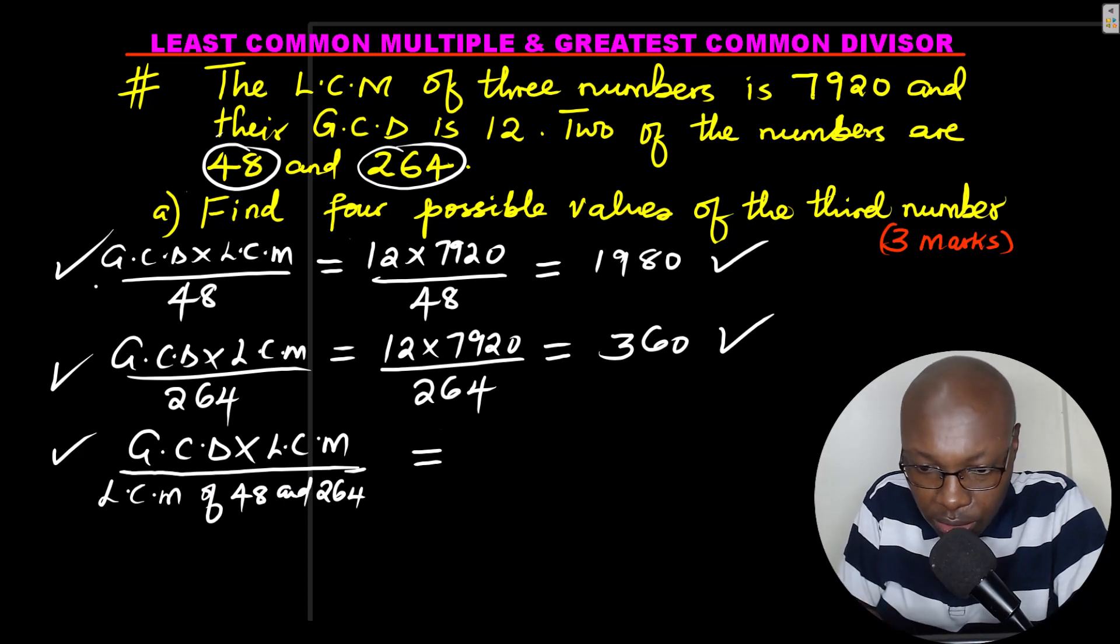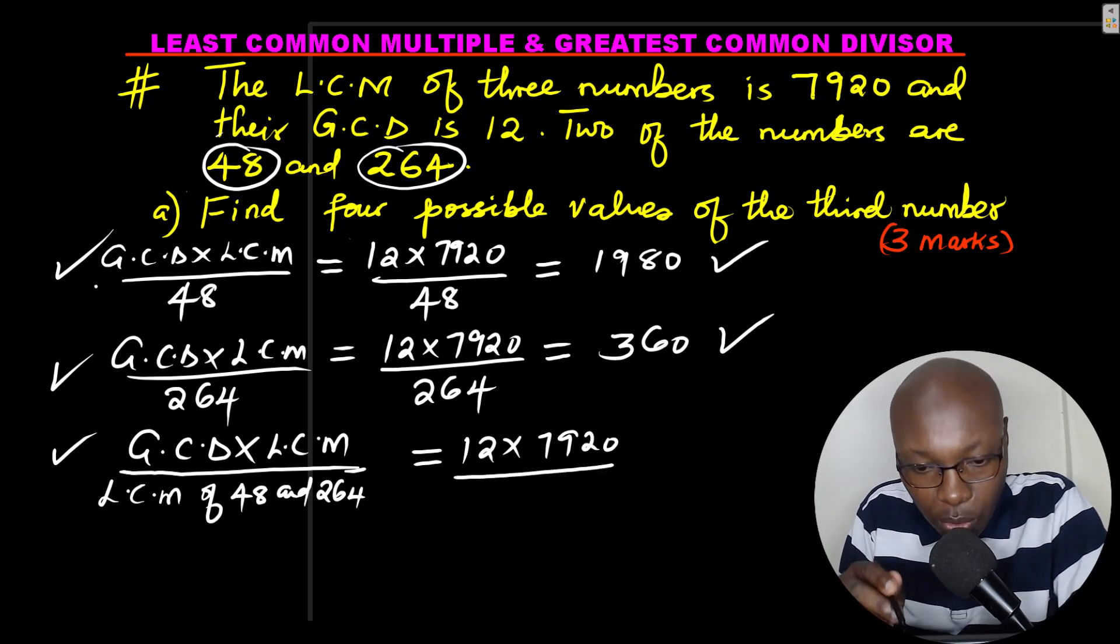GCD, which is 12, times LCM, 7920. Then divided by the least common multiple of 48 and 264. So I'd like you to calculate what is the least common multiple of 48 and 264. Those are the two numbers given. So 48 and 264, take your time, calculate that.